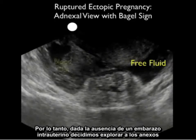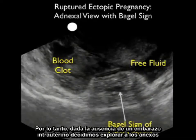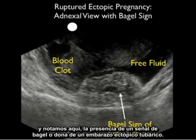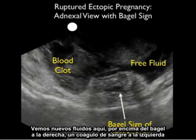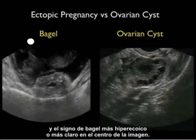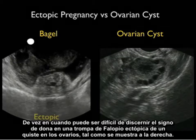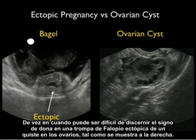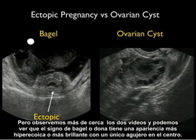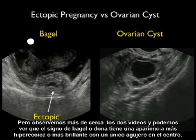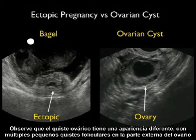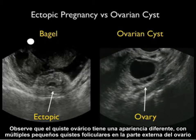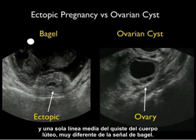Given the absence of an intrauterine pregnancy, we scanned out to the adnexa and notice here the presence of a bagel sign of a tubal ectopic pregnancy. We see fresh fluid above the bagel to the right, blood clot to the left, and the more hyperechoic or lighter bagel sign in the middle of the image. It can be difficult to discern the bagel sign from an ovarian cyst as shown here. The bagel sign has a more hyperechoic, brighter appearance with a single hole in the middle, whereas the ovarian cyst has multiple small follicular cysts to the outer portion of the ovary and a single midline corpus luteum cyst — very different than the bagel sign.